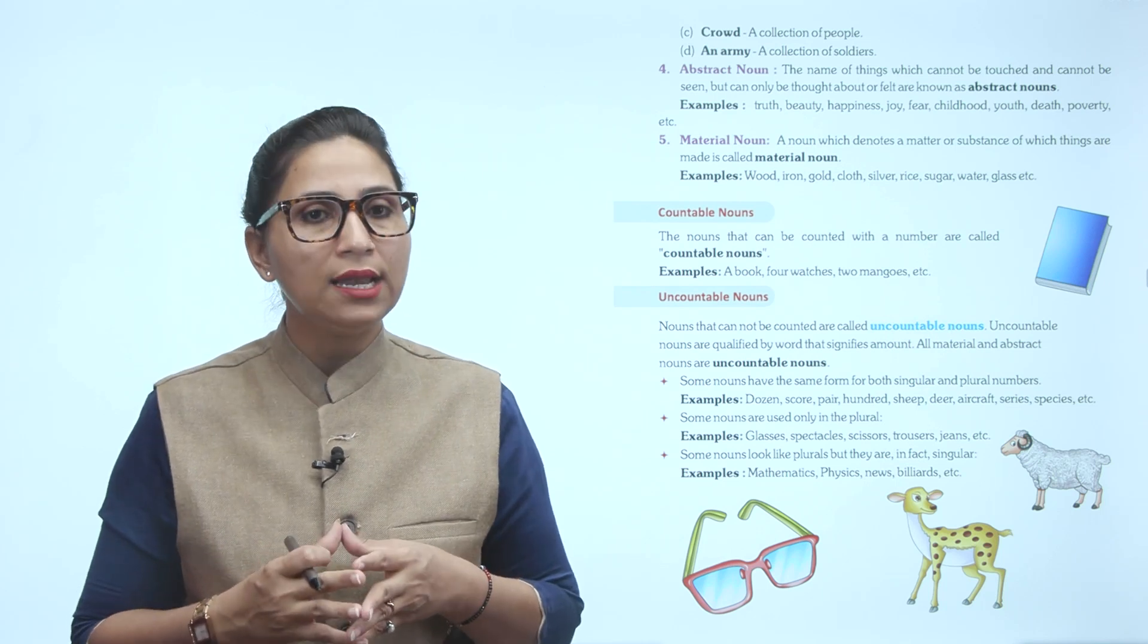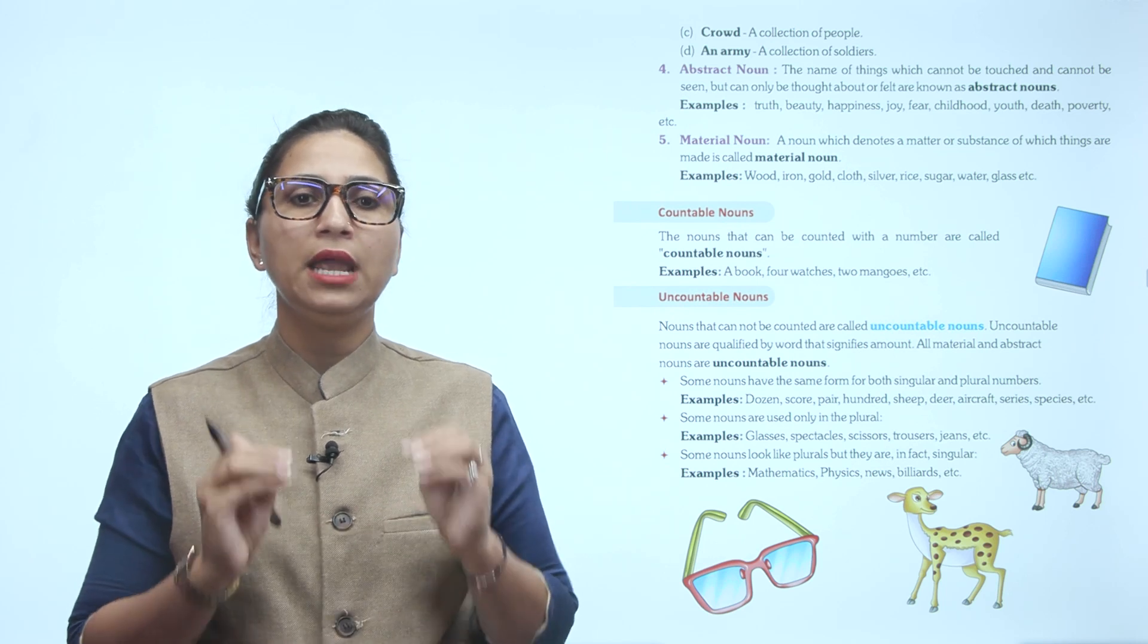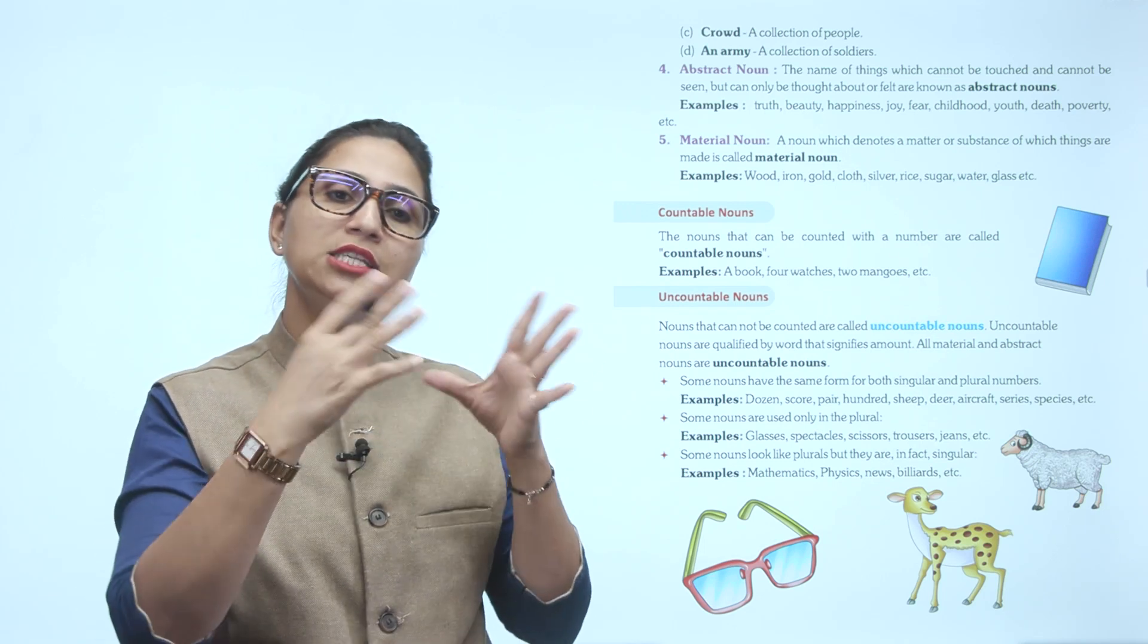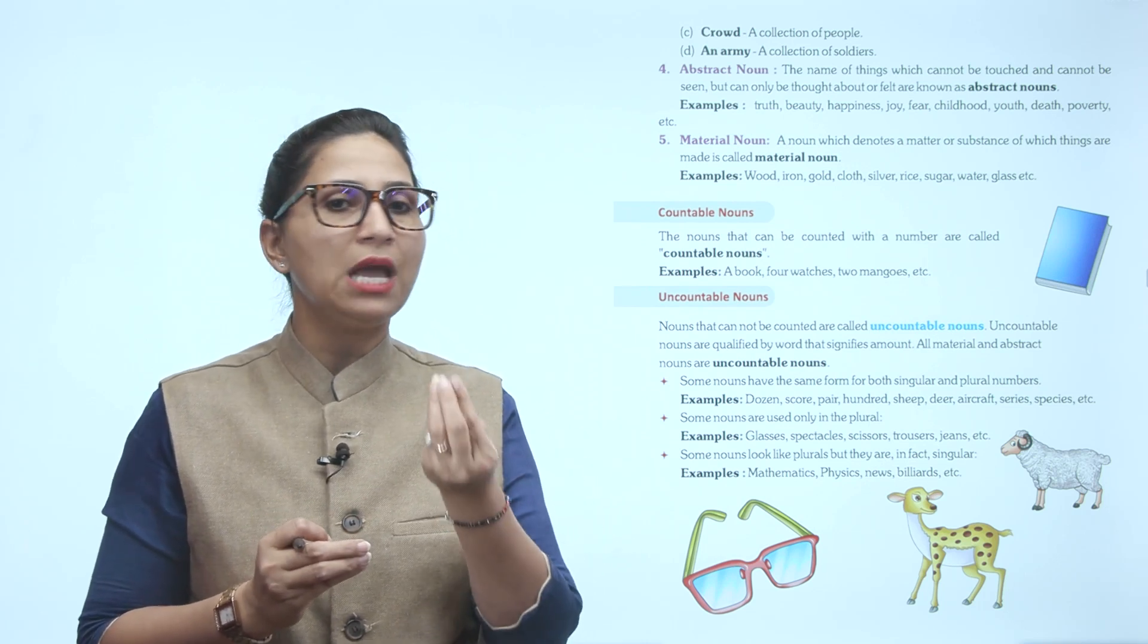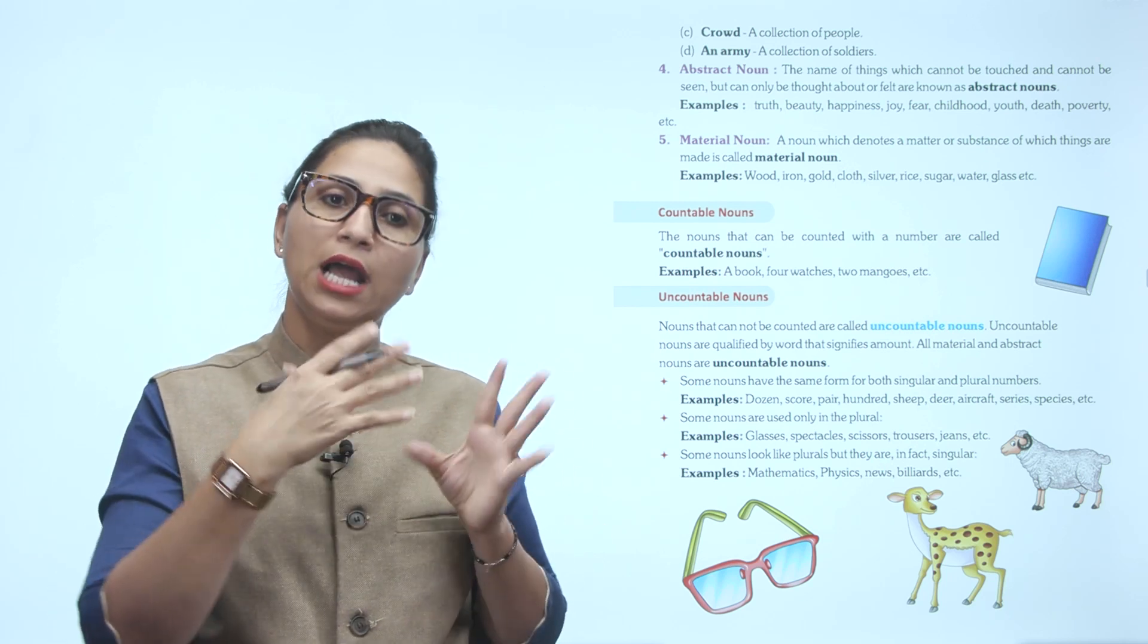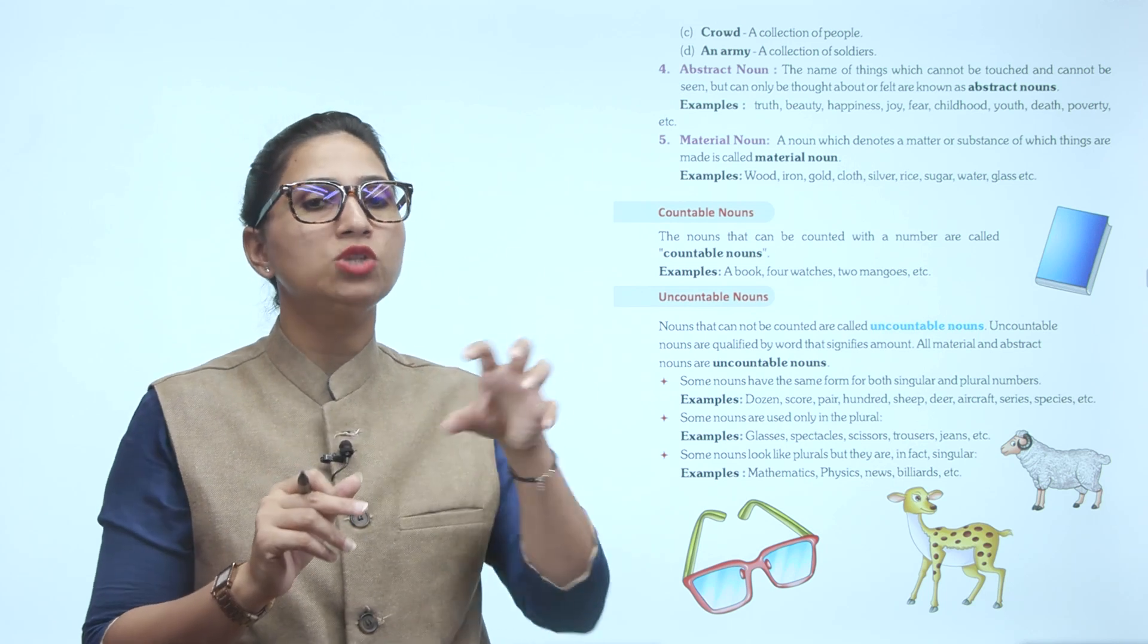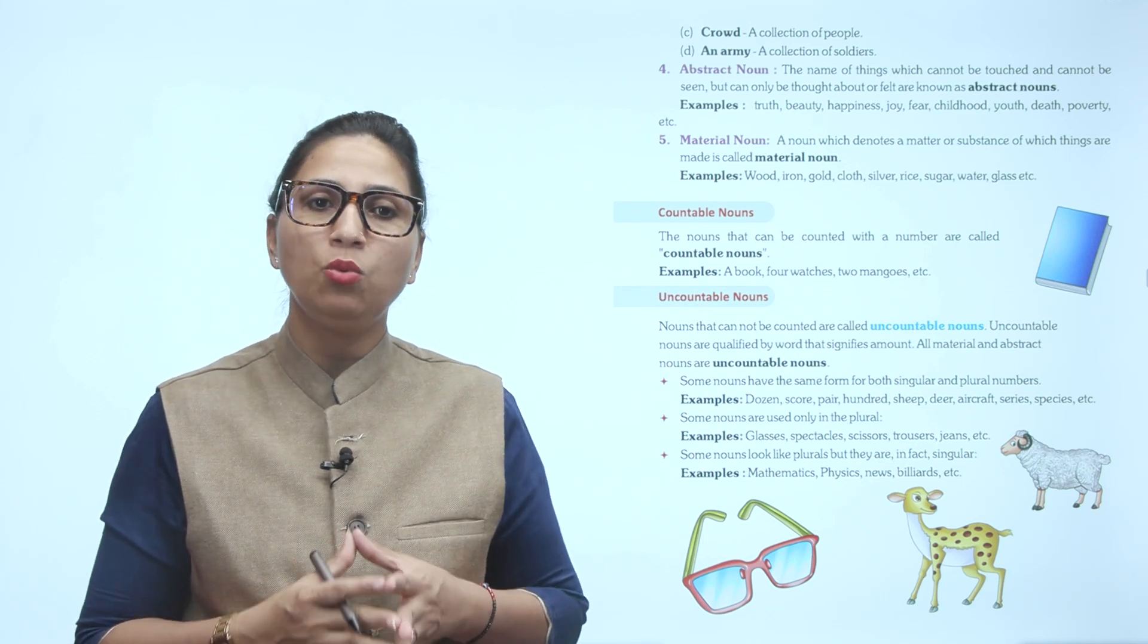Next is material noun. A noun which denotes a matter or substance of which things are made is called a material noun. For example, wood - we can make chairs, tables, or almirahs from wood. The material is used to give shape to things. Examples include wood, iron, gold, cloth, silver, rice, sugar, water, glass.